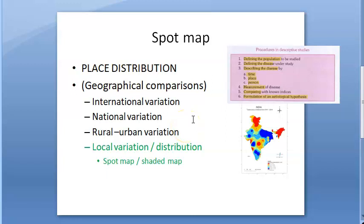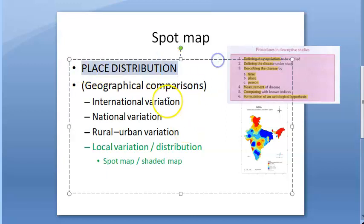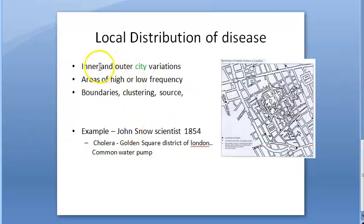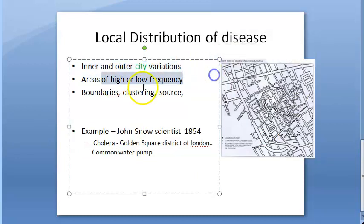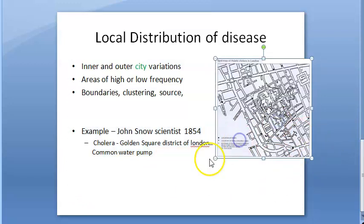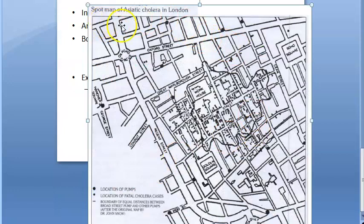To summarize: it is an epidemiological descriptive study of place distribution of disease — specifically local variation and local distribution. You can see variations within the city: high frequency and low frequency areas, boundaries, clustering of disease cases, and identify the source. Example: John Snow, 1854, cholera, Golden Square district of London, common water pump — spot map of Asiatic cholera in London showing location of pumps, boundaries, and location of fatal cases.